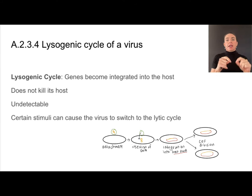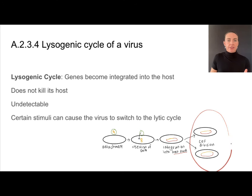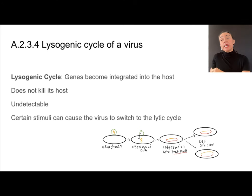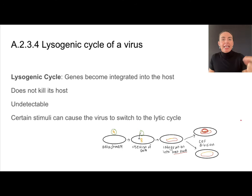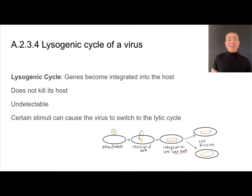Certain stimuli can cause the lysogenic cycle to switch into the lytic cycle. The viral DNA can sit dormant, incorporated into the host DNA for many generations of cell division. Certain stimuli cause the virus to suddenly switch into lytic cycle mode, at which point it starts transcribing and translating the viral DNA, making new viral particles, and then bursting those host cells.